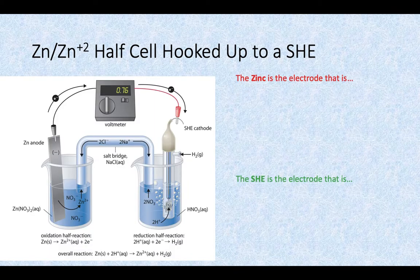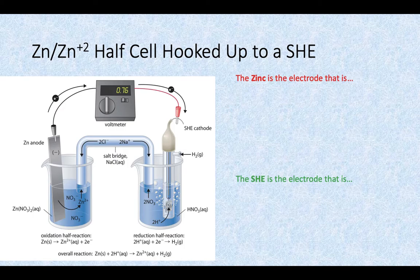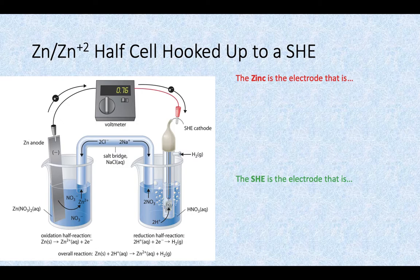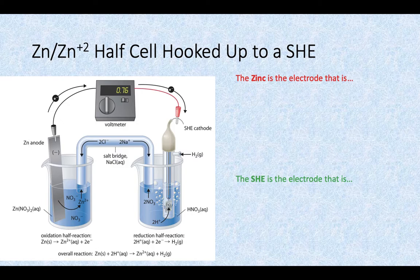So if we hooked up a zinc electrode and a zinc ion solution, that half cell, if the other half was the SHE, the standard hydrogen electrode, and we're looking at this picture and kind of taking it all in, you could see that the electrons are leaving the zinc electrode headed to the right over to the SHE. So the zinc is losing the electrons, and the SHE is the one gaining the electrons.